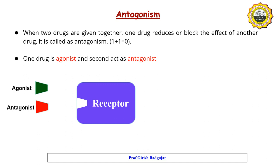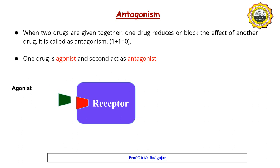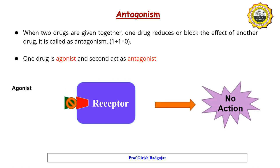Let us understand this concept through this animation. There is a receptor and there are two drugs — one is agonist and second is antagonist. When the antagonist binds with the receptor, it prevents the binding of the agonist to the receptor, so the agonist will not be able to produce any action. This mechanism is called antagonism — one drug blocks or prevents the action of another drug.